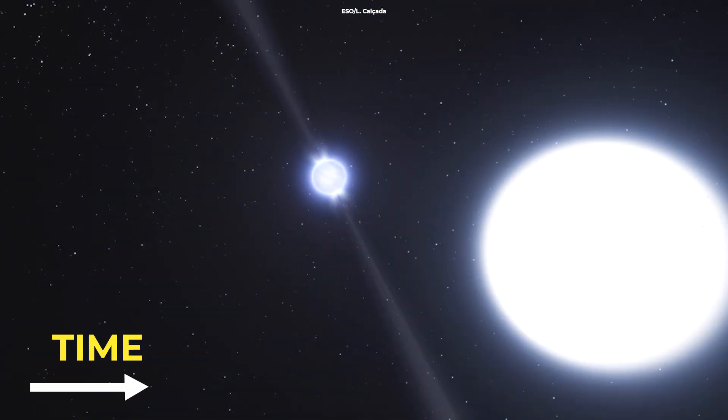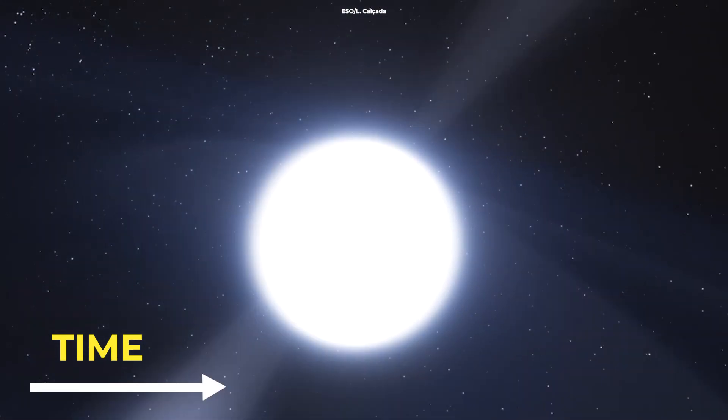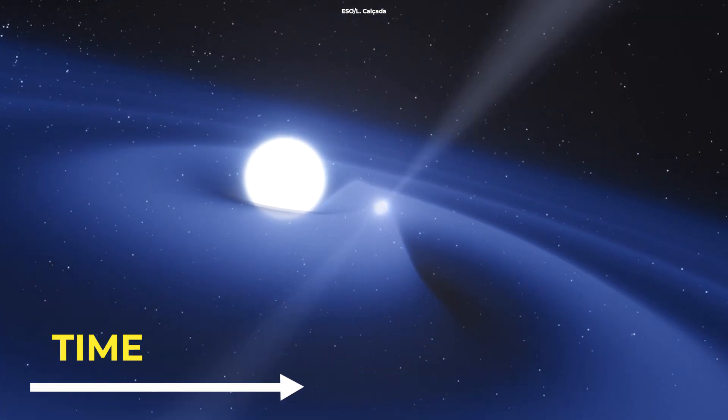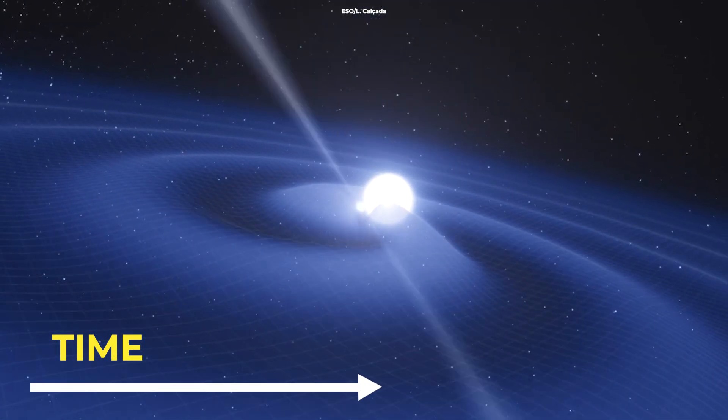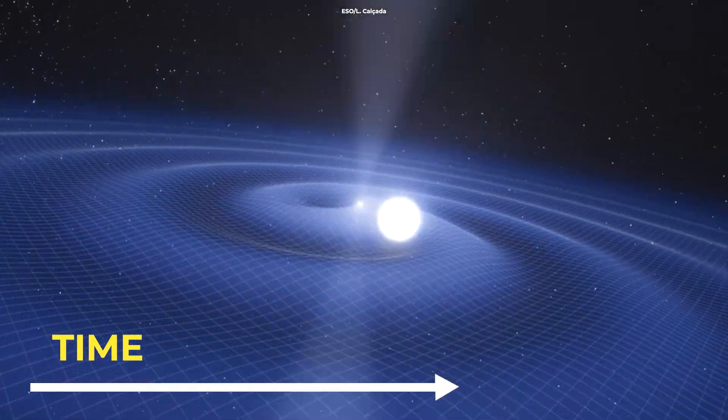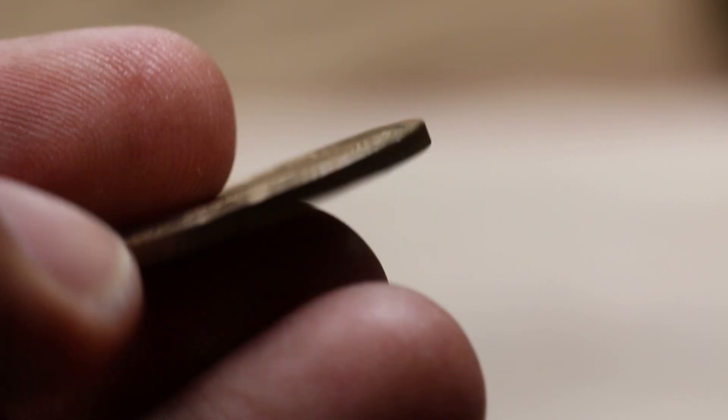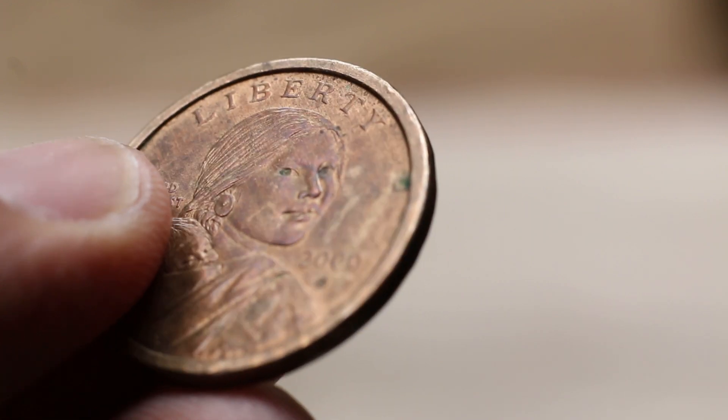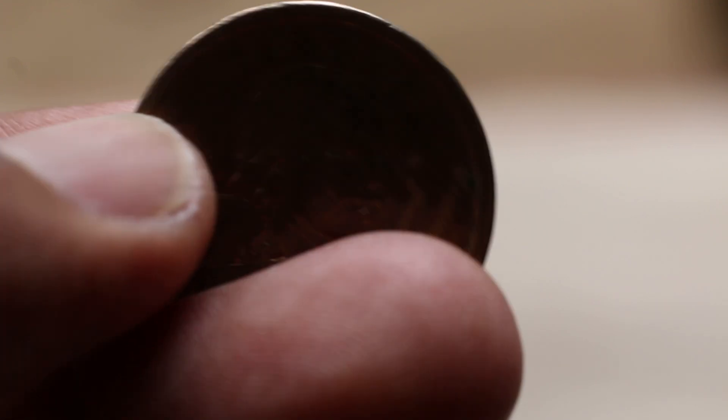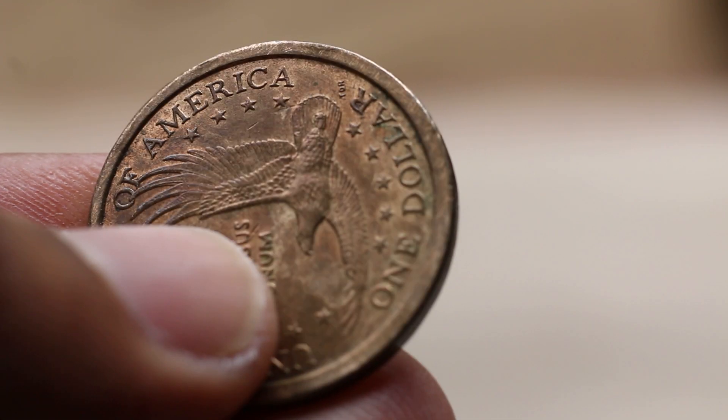For everything in the universe to happen, it takes time. That's why if you want to describe the behavior of the universe, you have to think in terms of space-time. Think of space and time as the two sides of the same coin, called space-time, and that will conclude space and time are the same thing.